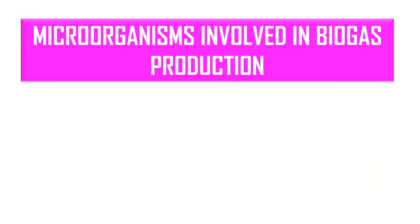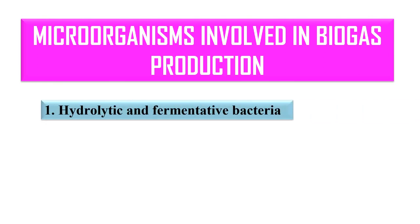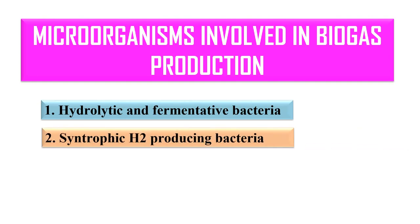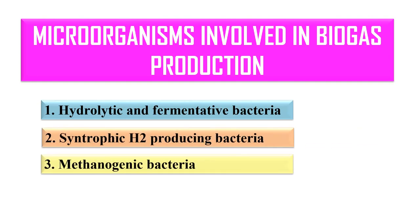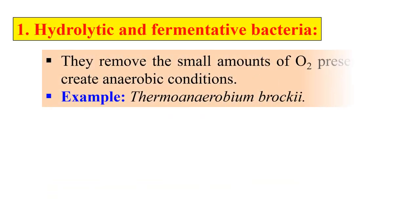What are the microorganisms used in biogas production? There are many microorganisms that can be used, and they are generally grouped into four types: hydrolytic and fermentative bacteria, syntrophic hydrogen producing bacteria, methanogenic bacteria, and acetogenic bacteria.